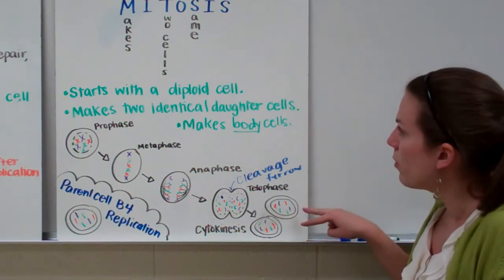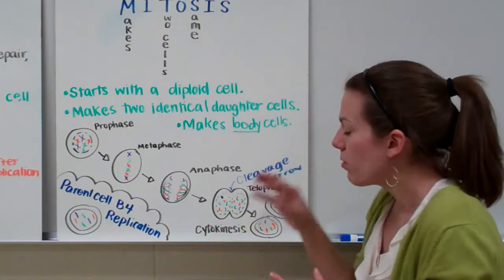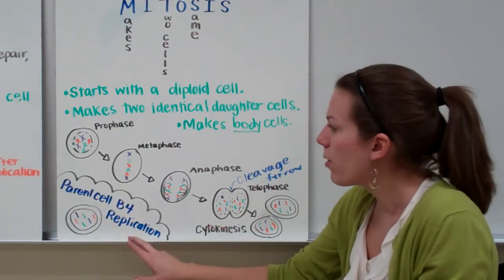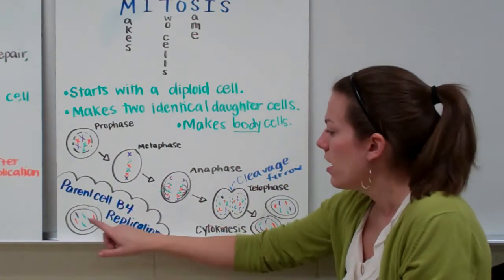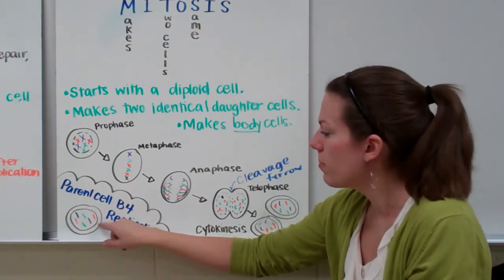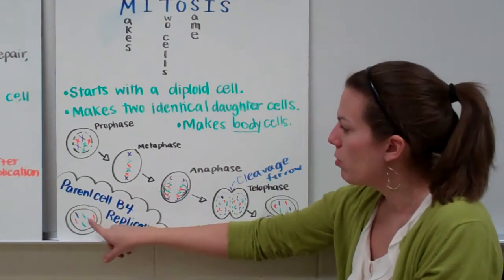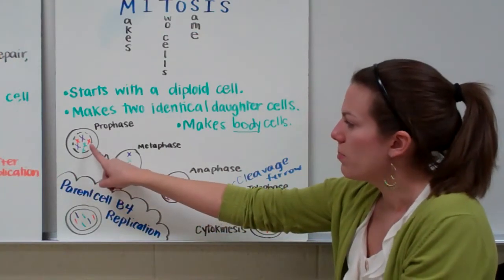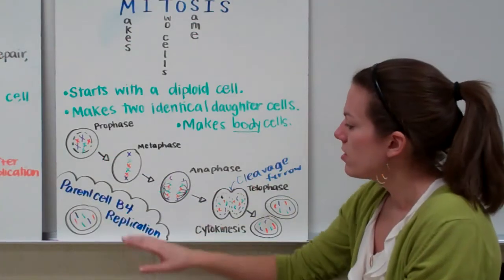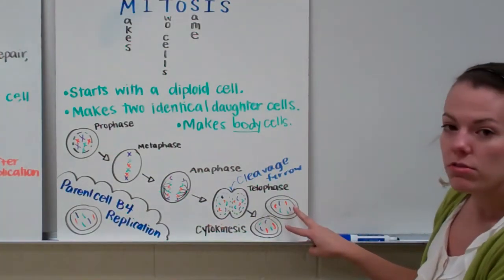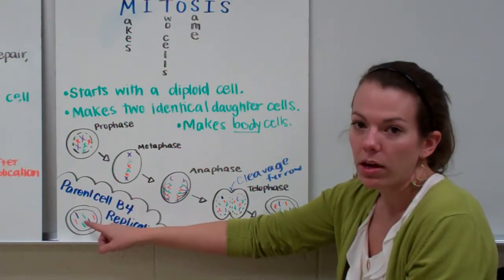We've made two diploid cells in mitosis. Just a quick snapshot in reverse: before we get to prophase, the cell had single chromosomes before replication. Then we replicated the chromosomes to get to prophase — you can see how they look like X's. Our two produced cells look exactly the same as the original parent cell.